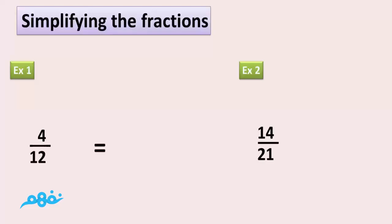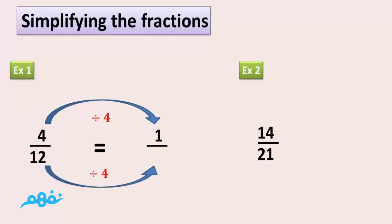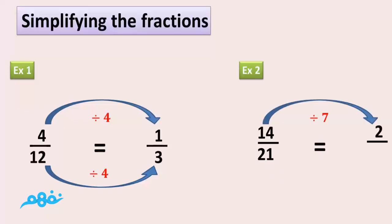For example 1: 4 divided by 4 equals 1, over 12 divided by 4 equals 3, so 4 over 12 simplifies to 1 over 3. For example 2: 14 over 21 equals 2 over 3.